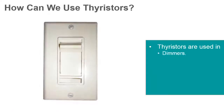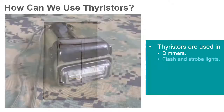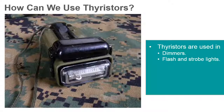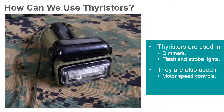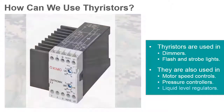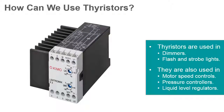Thyristors have been used as lighting dimmers in television, motion pictures, and theater. They're also used in both flash and strobe lighting. Aside from lighting, thyristors are also used in motor speed controls, pressure control systems, and liquid-level regulators.